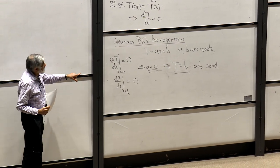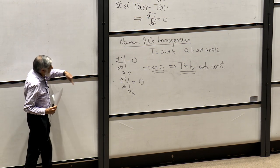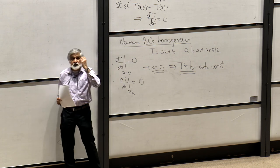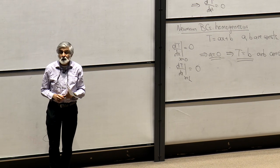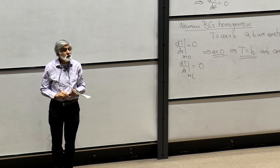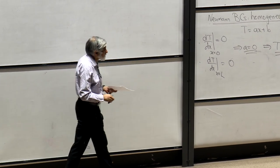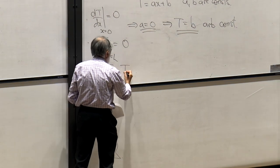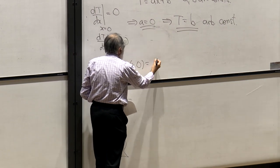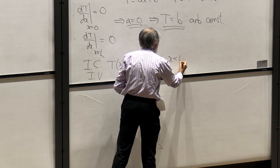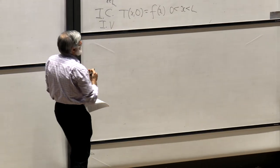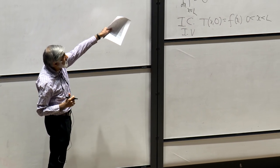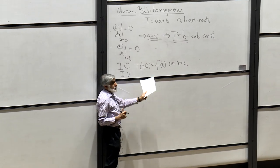There's an arbitrary constant remaining. This might make you think there is a non-unique solution to the heat equation since T equals b satisfies it. But we are ignoring one other condition — the initial condition. We forgot the initial value: T at x, t=0 equals some f(x).